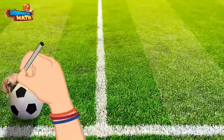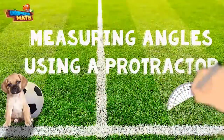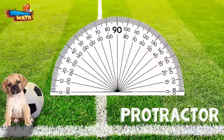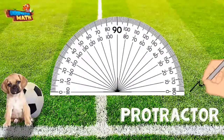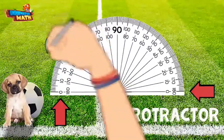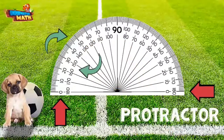Welcome back to Underwater Math. Today we are learning how to measure angles using a protractor. You might be wondering what a protractor is and how it measures angles. This is a protractor — it has two sets of numbers that go from zero degrees to 180 degrees. When reading a protractor, you either look at the top numbers or the bottom numbers depending on the angle.